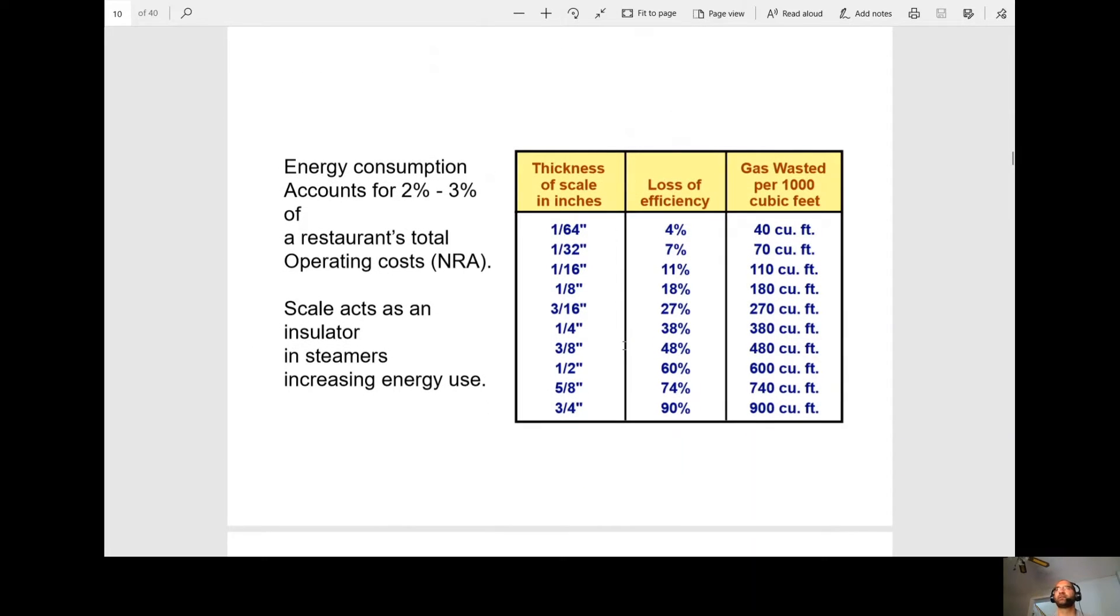So here's just one thing that you can kind of explain to the customer why scale buildup's bad. Obviously, energy consumption, so scale acts as an insulator, so it's around the element, it's around the tank, we can't really heat the water directly. So based on the thickness of the scale, if you have three quarters of an inch, it goes up to 90% loss of efficiency. So you'll find that that boiler will probably be running almost the entire day. A good indicator of that is when you fire it up, it takes forever to get to temperature, to your set PSI.